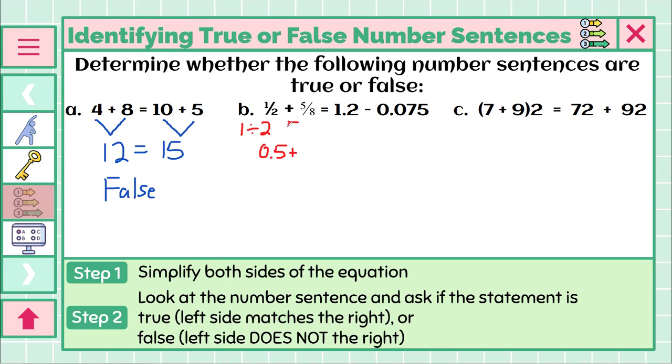Plus, instead of 5 eighths, let's find out what is 5 divided by 8. And 5 divided by 8 is 0.625. So 0.625. And supposedly, that's supposed to be equal to 1.2 minus 0.075. Let's do some more simplifying. Let's combine some like terms here. We have 0.5, and we are adding that to 0.625.